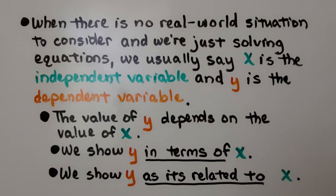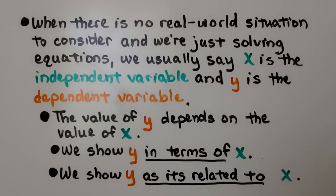When we have a real-world situation, we have some actual numbers that we're dealing with. When there's no real-world situation to consider and we're just solving equations, we usually say x is the independent variable and y is the dependent variable. The value of y depends on the value of x.